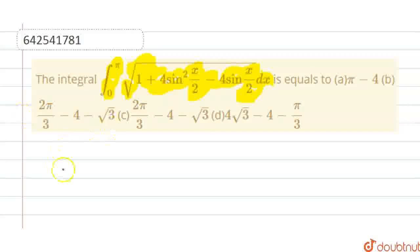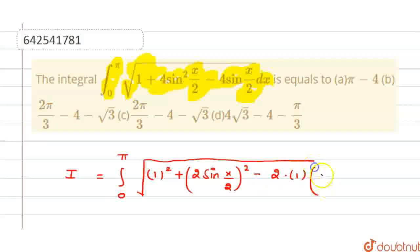Let us call this integral as I. So I equals integral 0 to π under root 1. Here, 1 can be written as 1², and this can be written as + (2 sin x/2)², and this can be written as - 2·1·2 sin(x/2) dx.